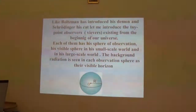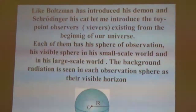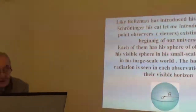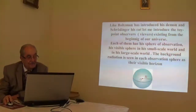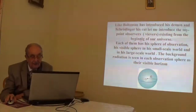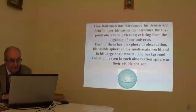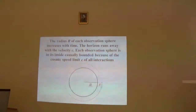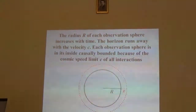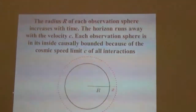My purpose is to introduce the whole list of lambda units to show other features of dark energy. Like Boltzmann introduced his demon and Schrödinger his cat, let me introduce toy-point observers existing from the beginning of our universe. Each of them has a sphere of observation — their visible sphere — in both small-scale and large-scale worlds. The background radiation is seen in each observation sphere as their visible horizon, and the radius R of each sphere increases with time. The horizon runs away with velocity C; each sphere is causally bounded because of the cosmic speed limit C.